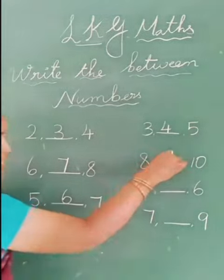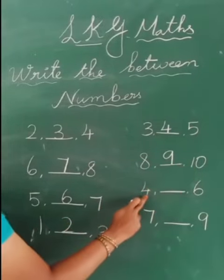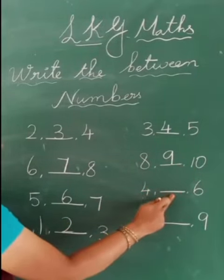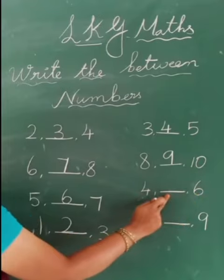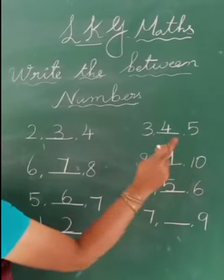Next one, 4 dash 6. What will come here? Yes, 5. 4, 5, 6.